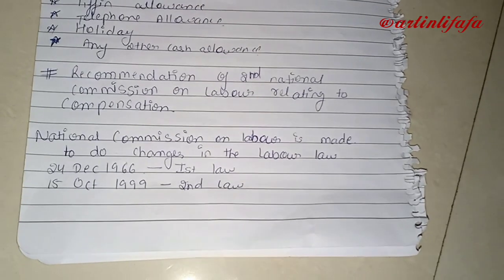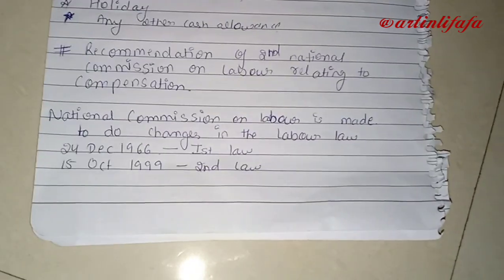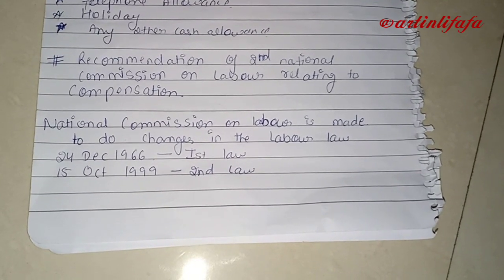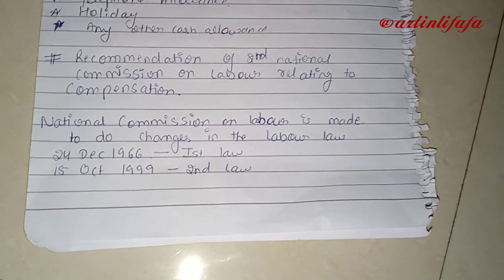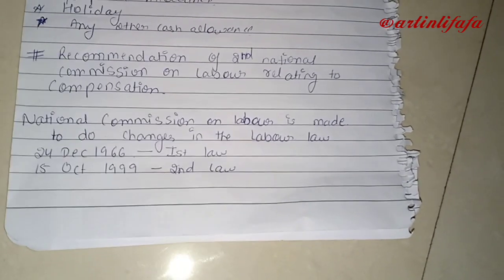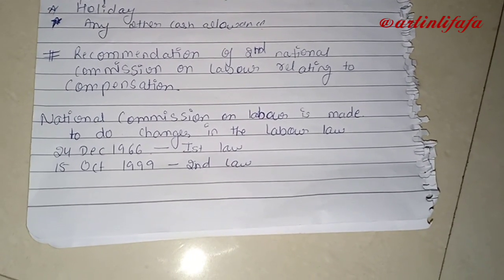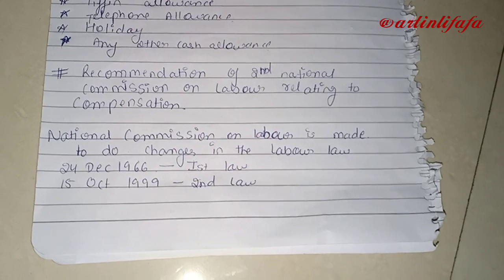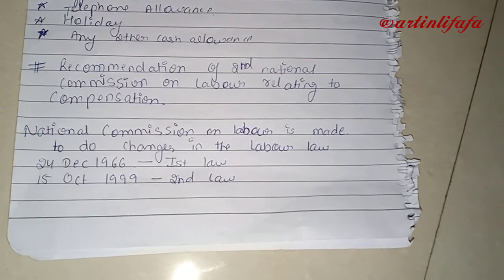The national commission on labor is formed to make changes in labor law. The first commission was formed on December 24th, 1966, and the second was formed on October 15th, 1999. The main purpose was to address labor and compensation issues. This covers all of Unit 3. If you have any doubts, please let me know in the comment section.